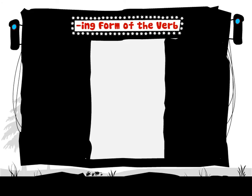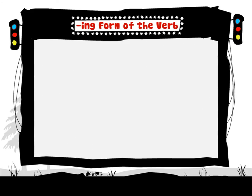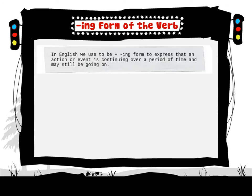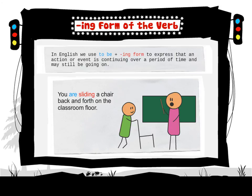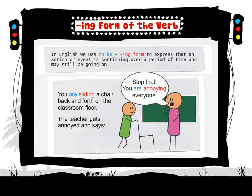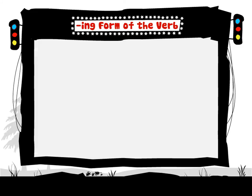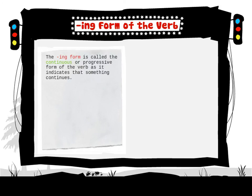In English, we use 'to be' plus the ING form to express that an action or event is continuing over a period of time and may still be going on. For example, you are sliding a chair back and forth on the classroom floor. The teacher gets annoyed and says, 'Stop that! You are annoying everyone!' The ING form is called the continuous or progressive form of the verb, as it indicates that something continues.